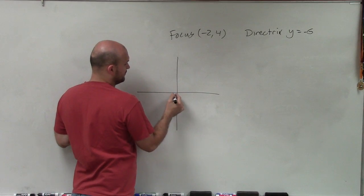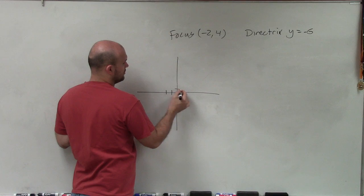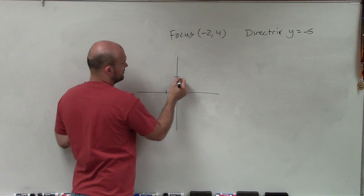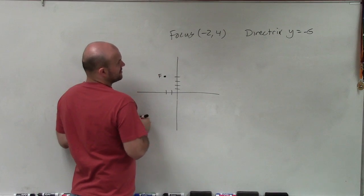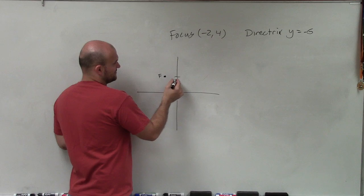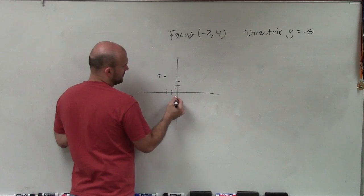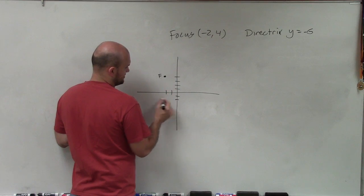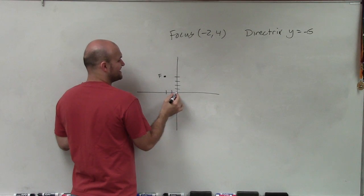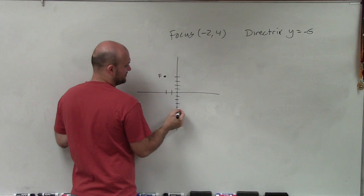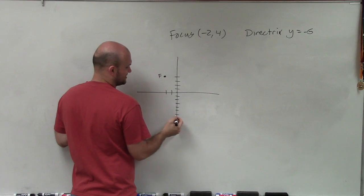So the focus is at negative 2, 4 — I go negative 2, up 4. And my directrix is at y equals negative 6, which is 6 units below the origin.